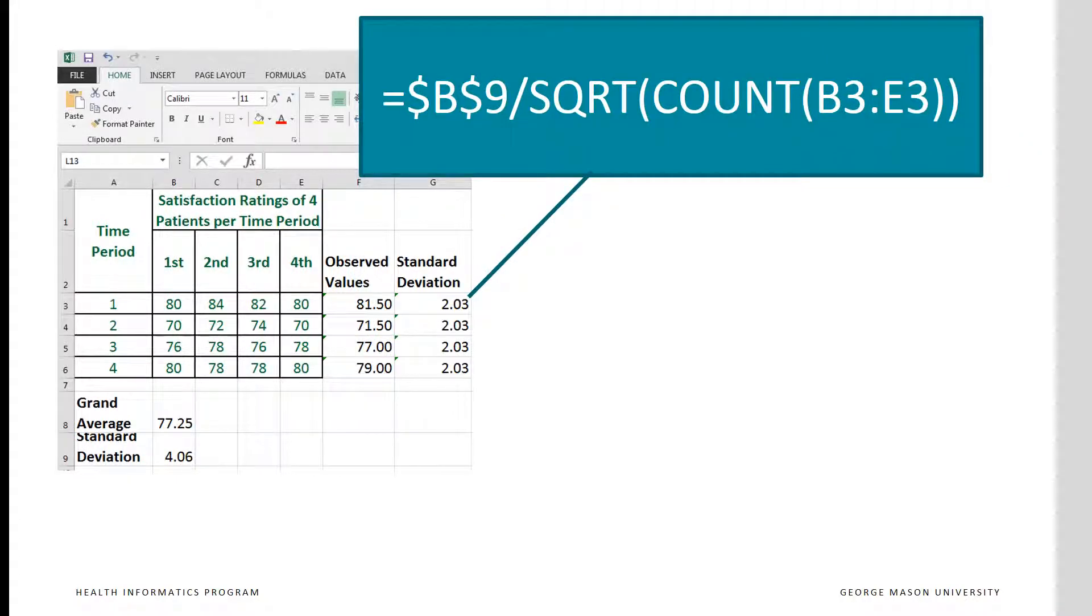Next, we use the standard deviation for all time periods and divide that by the square root of the count of the number of observations in the time period. Notice that the standard deviation, there is a dollar sign before b and before 9, so that when we copy it, it doesn't change.